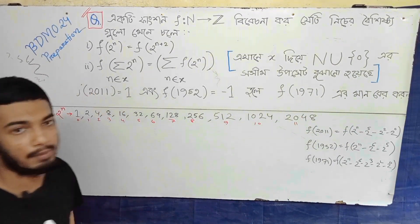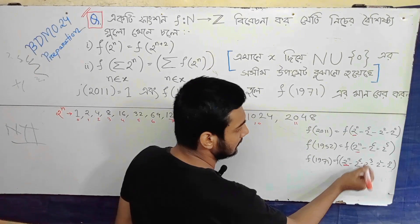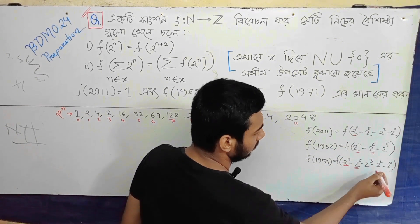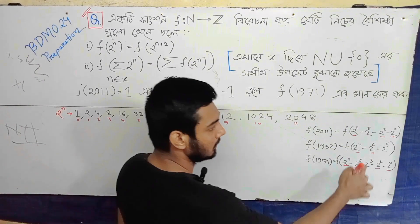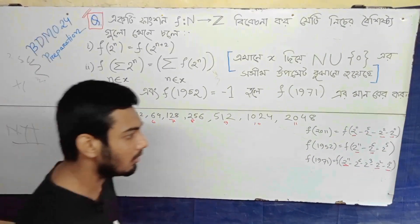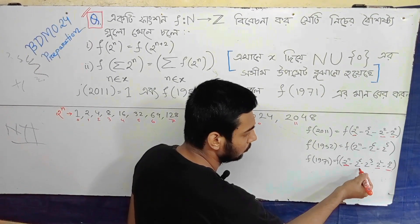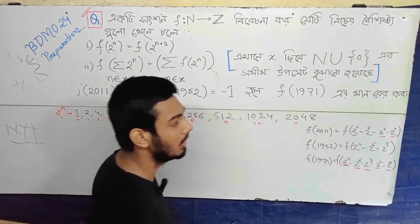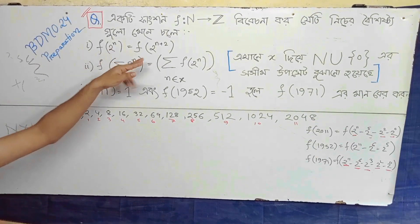So f of 1971. So this is the 2 to the power 11. Let's say the power 2 to the power 11. Like if you ask, so 2 of n equal 2 of n plus 2.